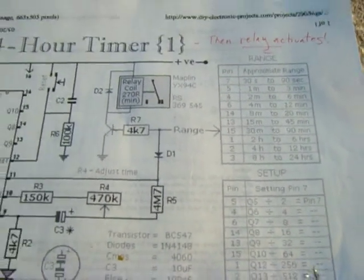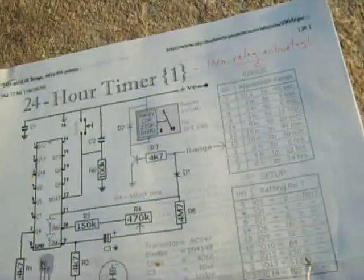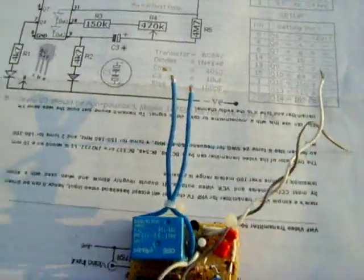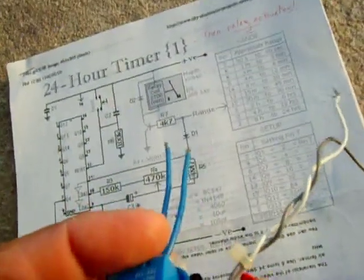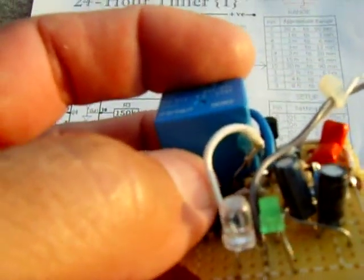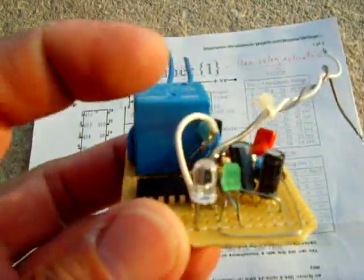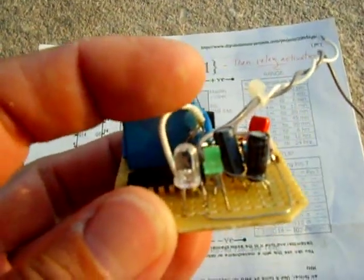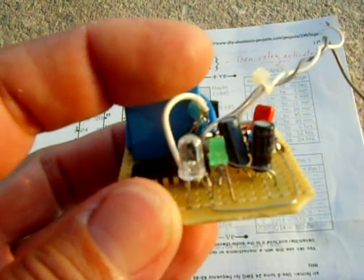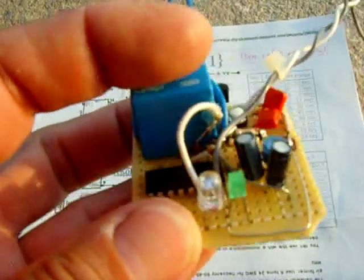You can make it loop by taking out a diode which this wire is actually connected onto. Because this diode, which is hard to see in the lighting, is also connected to a resistor. If you take the diode out and you connect this wire to the resistor, then the circuit would loop.